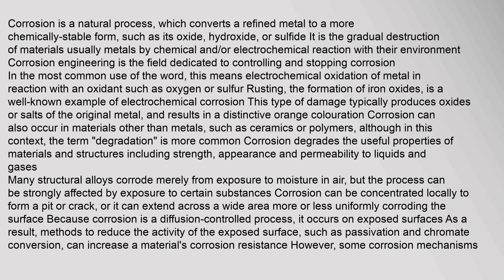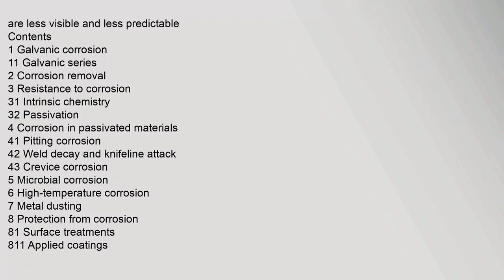Methods to reduce the activity of the exposed surface, such as passivation and chromate conversion, can increase a material's corrosion resistance. However, some corrosion mechanisms are less visible and less predictable.